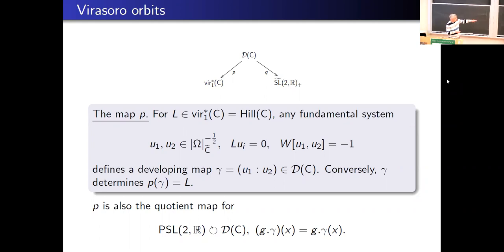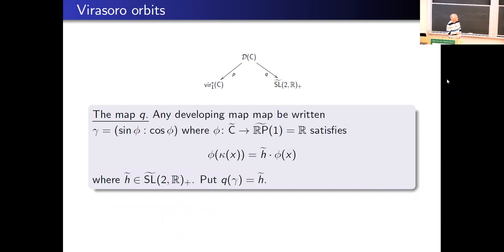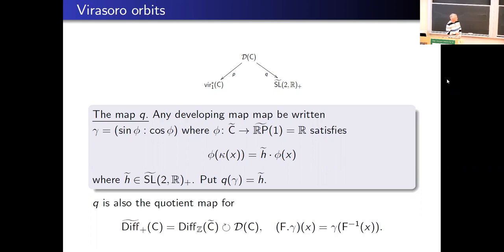For the right map: the developing map goes into RP^1, we can lift it to a map into the universal cover of RP^1, which is R. The quasi-periodicity under PSL(2,R) becomes a quasi-periodicity under the universal cover of PSL(2,R), and q(γ) is this lifted monodromy. It doesn't depend on which choice of lift φ you choose. That defines the right map, and it turns out to also be the quotient map for the natural action of diffeomorphisms on the space of developing maps.